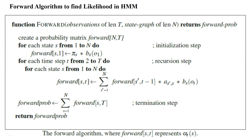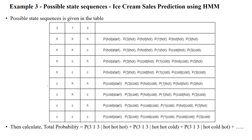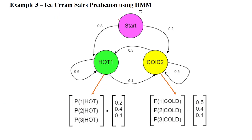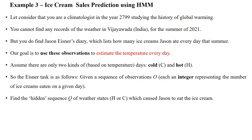Welcome to the forward algorithm to find maximum likelihood in hidden Markov model. As per the previous problem, here we need to find out the hidden sequence for given observation 313 — that means a person is eating three ice creams on the first day, one ice cream on the second day, and three ice creams on the third day. For this observation, we should identify the hidden state sequence.